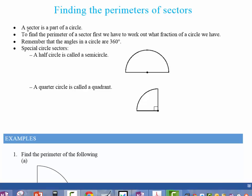So the first part is that a sector is part of a circle. So any part of a circle, like this semicircle here or this quarter of a circle, are called a sector. So to find the perimeter of a sector, first we have to work out what fraction of a circle that we actually have. The next thing we have to remember is that the angles in a circle all add up to 360 degrees.